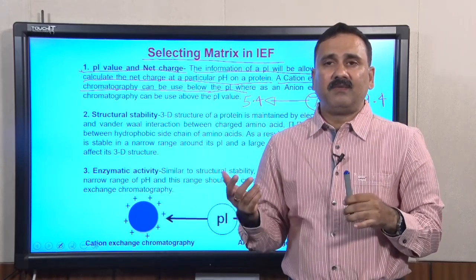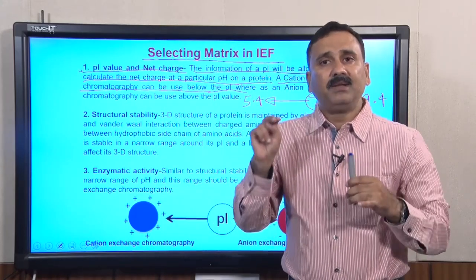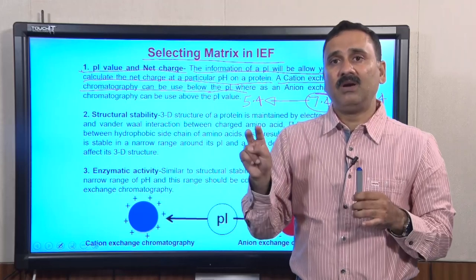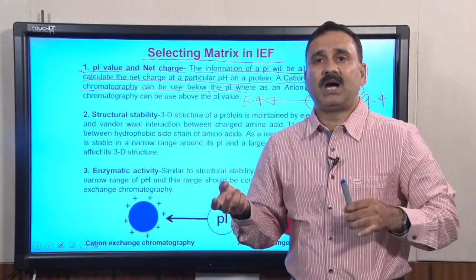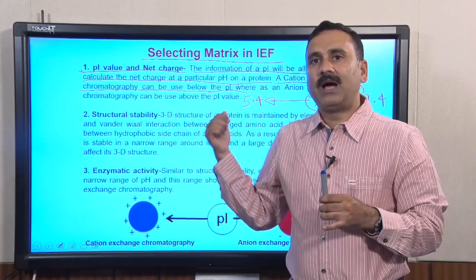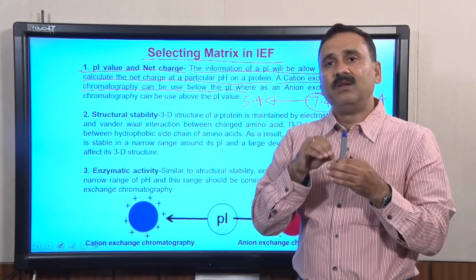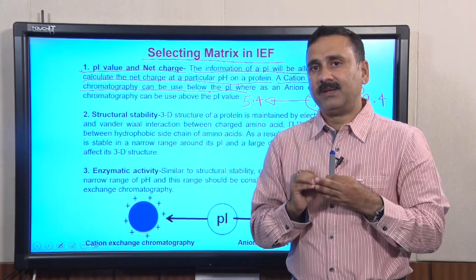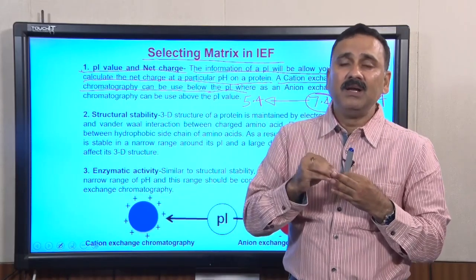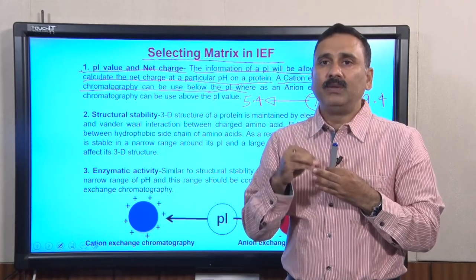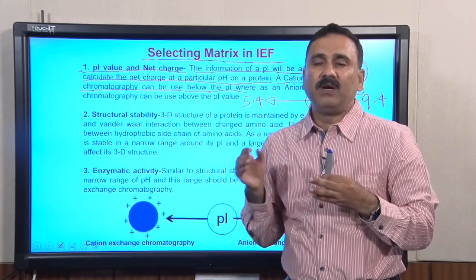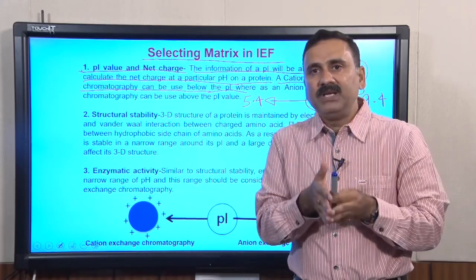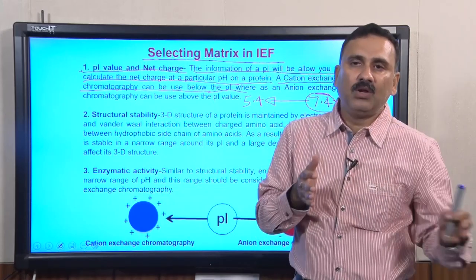Why a two-unit pH difference? Because this much difference is good enough to impart sufficient charge onto the protein to allow it to bind to the positive or negatively charged ligands on the matrix. If you go lower than that, it will still bind, but the affinity will be so low that as soon as you apply the washing buffer, the protein will come out. That is why the thumb rule is to use a two-pH-unit difference either on the lower or upper side.